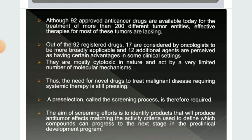There are 92 approved anti-cancer drugs available today, but there are more than 200 different tumor entities and effective therapies for most tumors are lacking. Out of 92 registered drugs, 17 are considered by oncologists to be more broadly applicable, and 12 additional agents are perceived as having certain advantages in some clinical settings. That is why we need to study the screening methods of anti-cancer drugs.